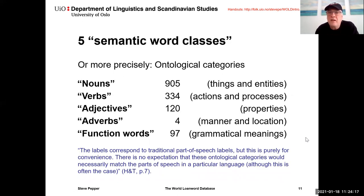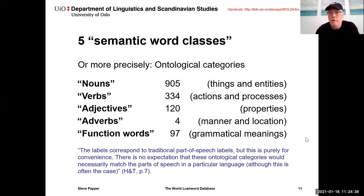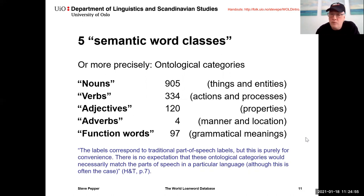More precisely, we're talking about ontological categories. As the editors write, the labels correspond to traditional part-of-speech labels, but this is purely for convenience — there's no expectation that these ontological categories would necessarily match the parts of speech in a particular language. The semantic word class labeled 'nouns' consists of things and entities; 'verbs' of actions and processes; 'adjectives' of properties; 'adverbs' of manner and location; 'function words' of grammatical meanings. These are ontological categories, not grammatical categories.